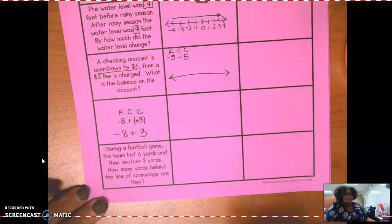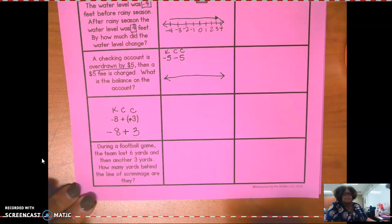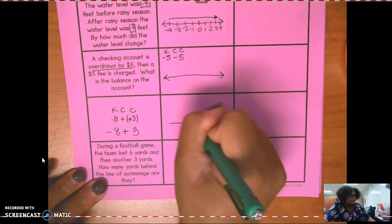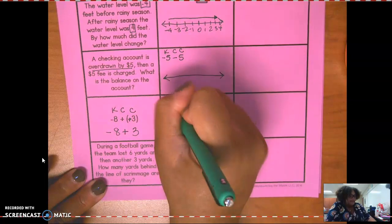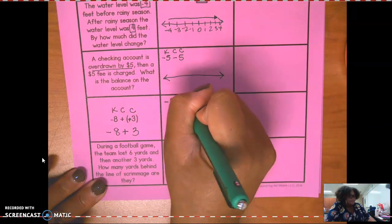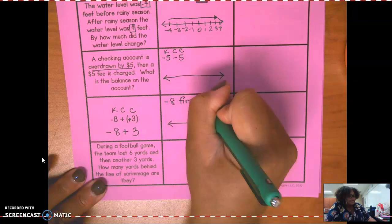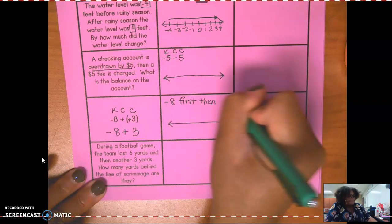Same signs add, different signs subtract and keep the greater absolute value or keep the sign of the number with the greater absolute value. Draw your number line. I would go negative eight first, then positive three.